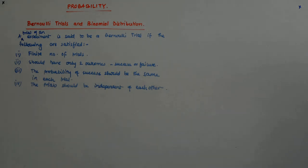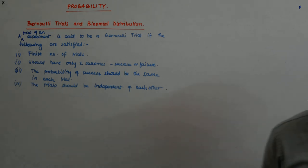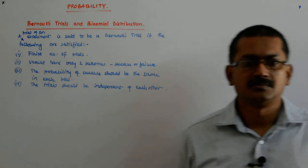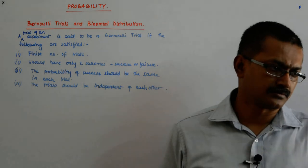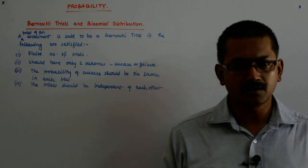Let us do an example. Six balls are drawn successively from an urn containing seven red and nine black balls. Tell whether the trials are Bernoulli trials when, after each draw, the balls are replaced, and when they are not replaced. Getting a red ball may be defined as success and getting a black ball as failure — success is whatever you have defined to be acceptable.